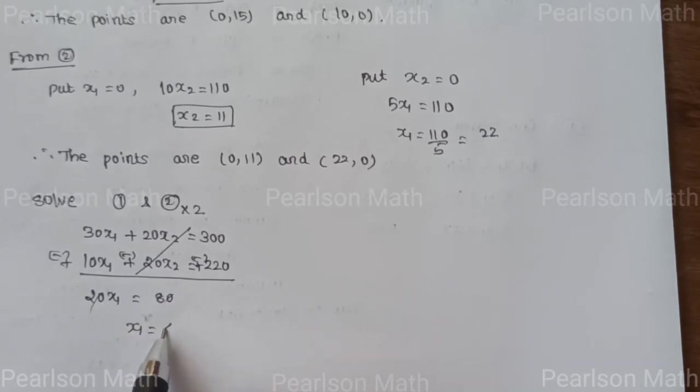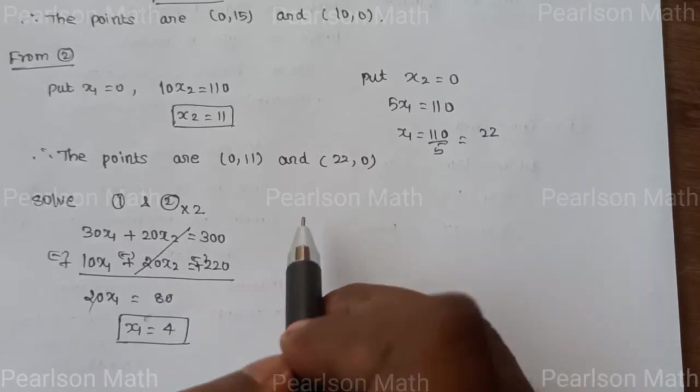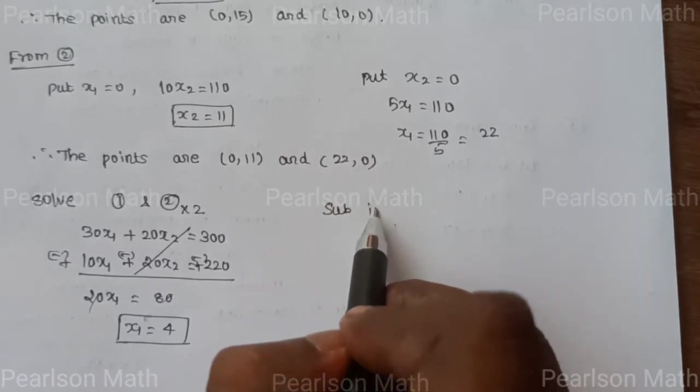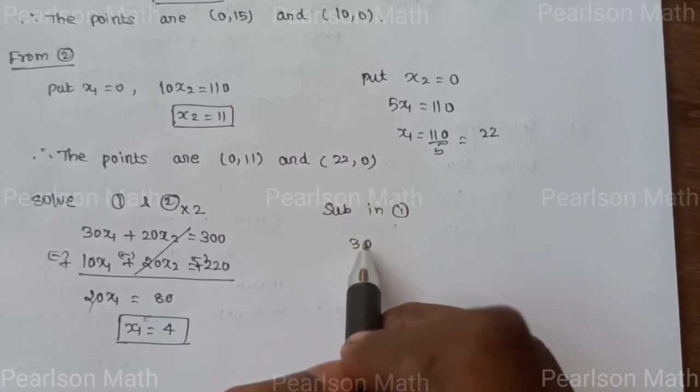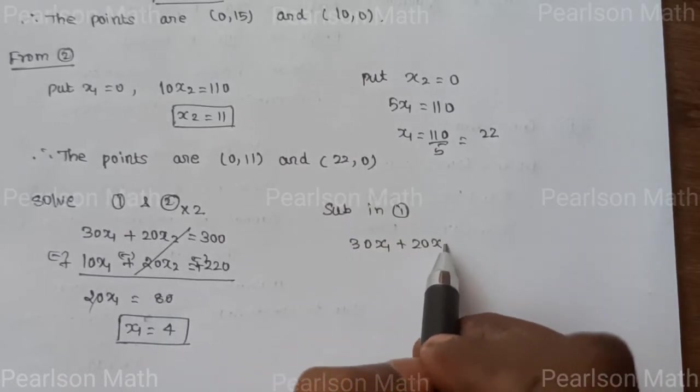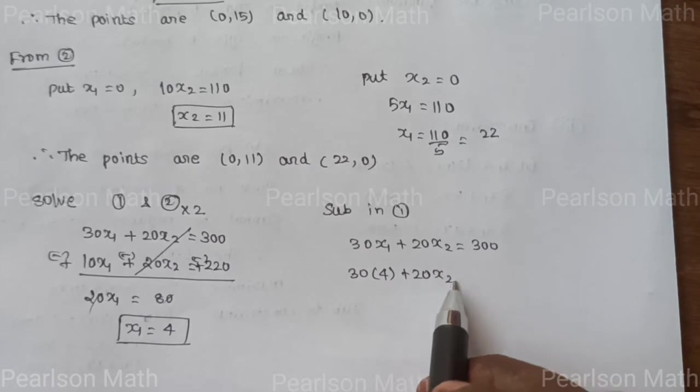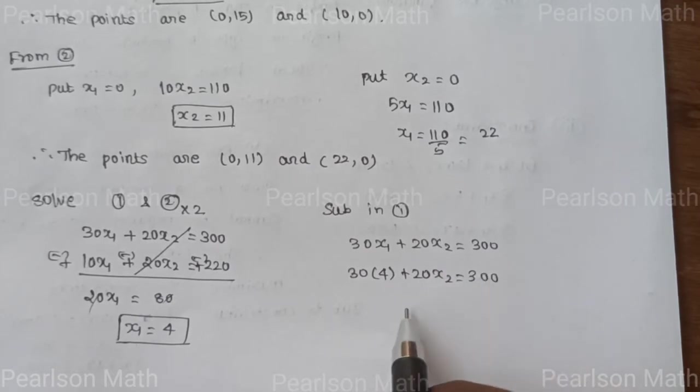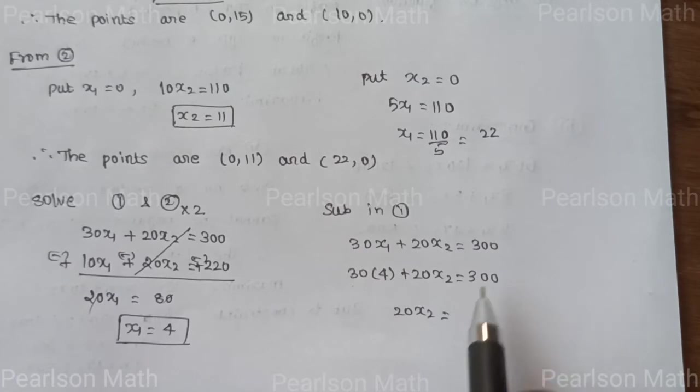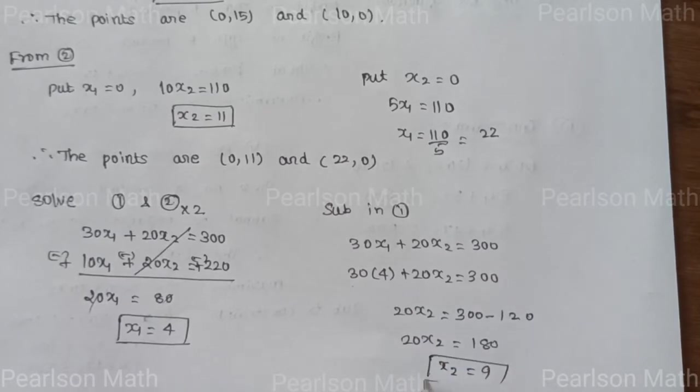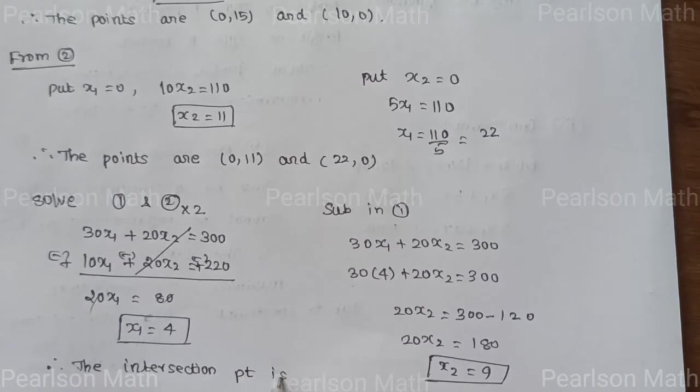Cancel the x₂ terms, so x₁ equals 4. Substitute x₁ equals 4 in the first equation: 30(4) plus 20x₂ equals 300. So 120 plus 20x₂ equals 300, therefore 20x₂ equals 180, and x₂ equals 9. The intersection point is (4, 9).